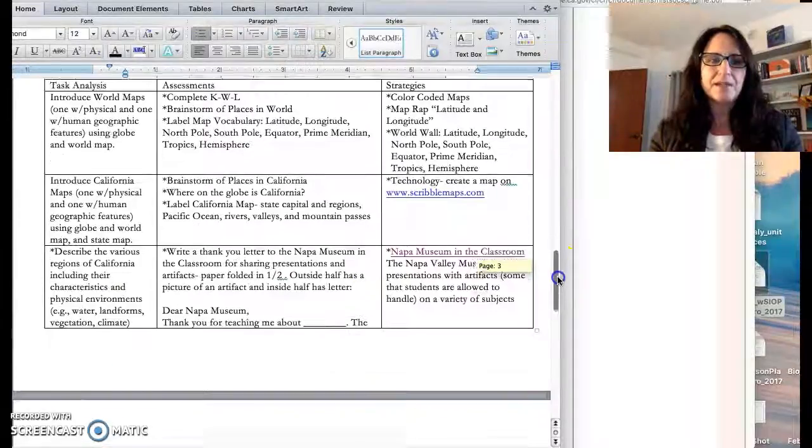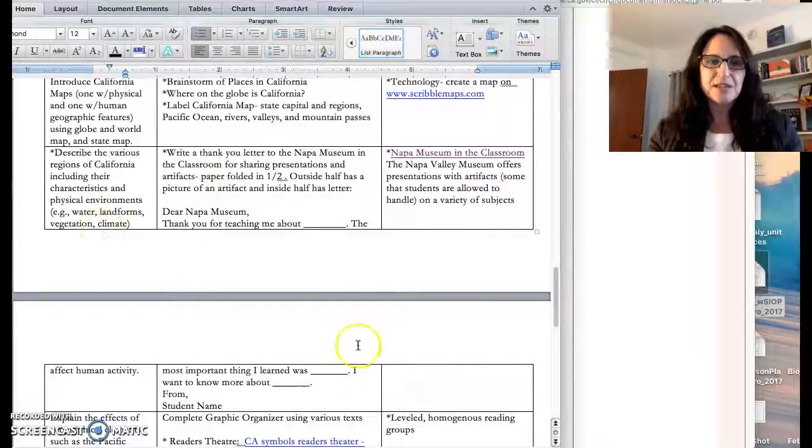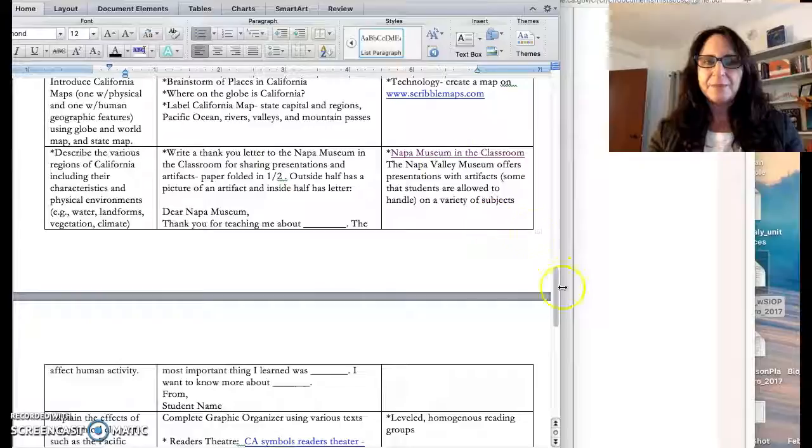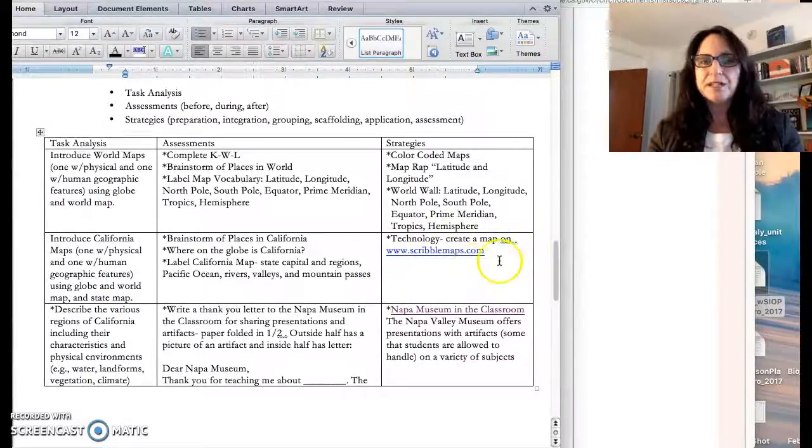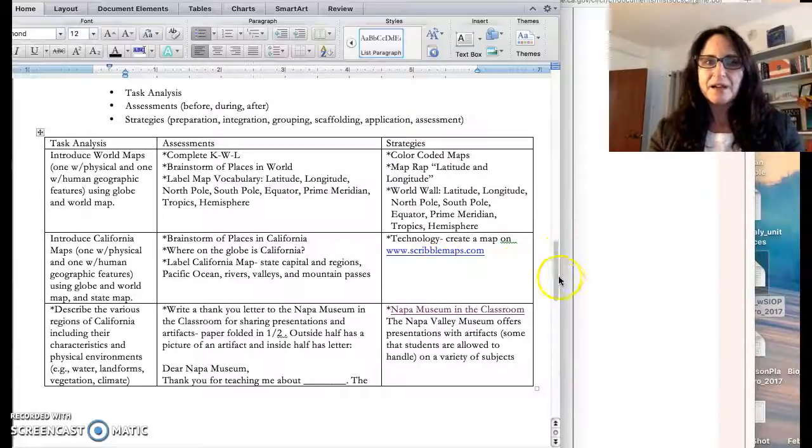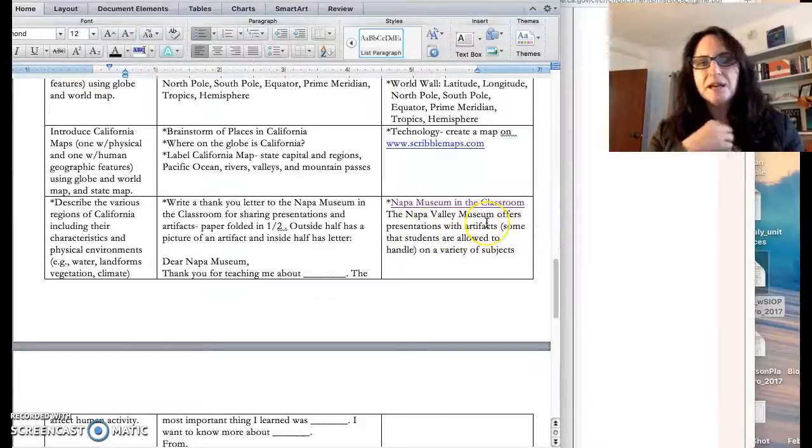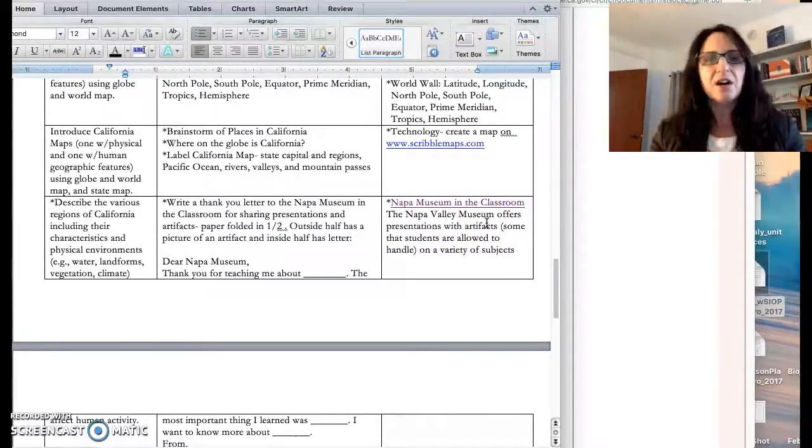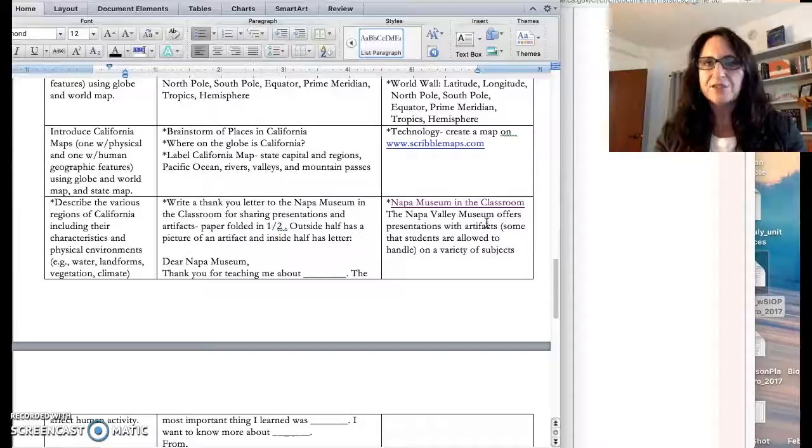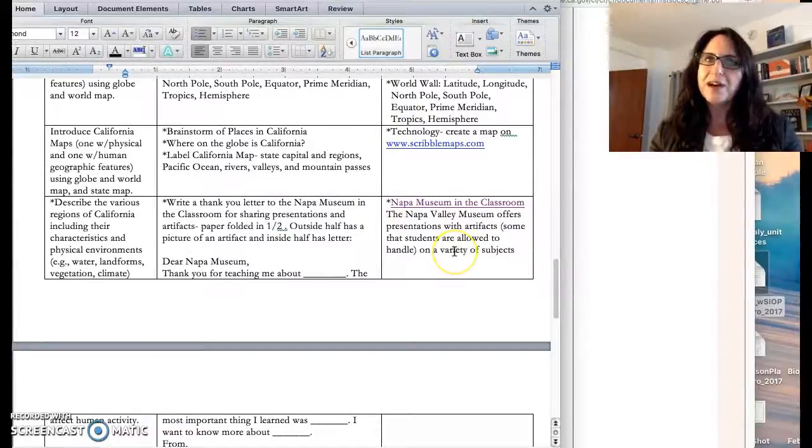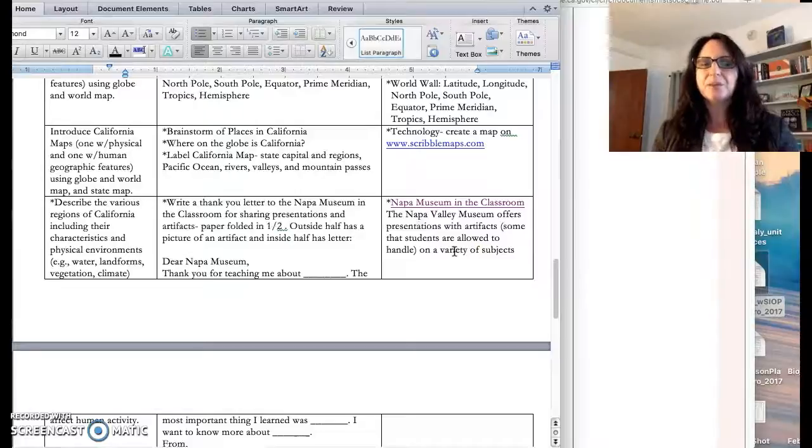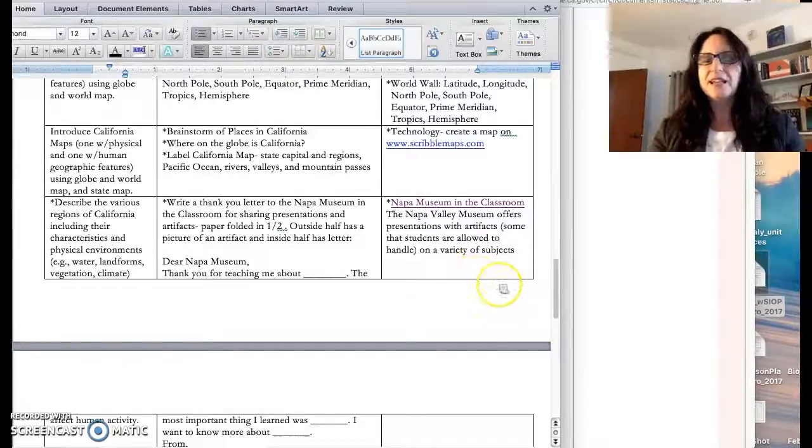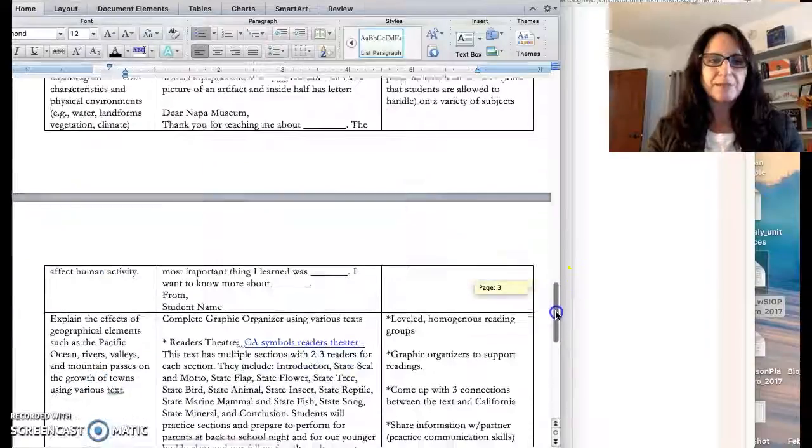Once I know that they have a visual concept of California, then I would move into them learning a little bit more about the different regions. I went online as well for creating a map and you can use ScribbleMaps.com. Then I found out that Napa Valley Museum actually offers Napa Museum in the Classroom where you can order these units that address the state standards to support your students and learning, and they have different artifacts for the different topics.